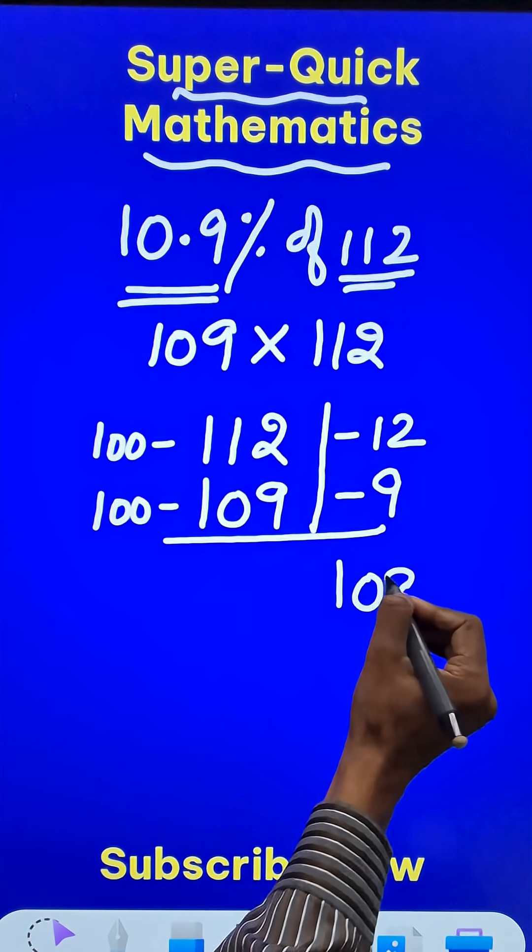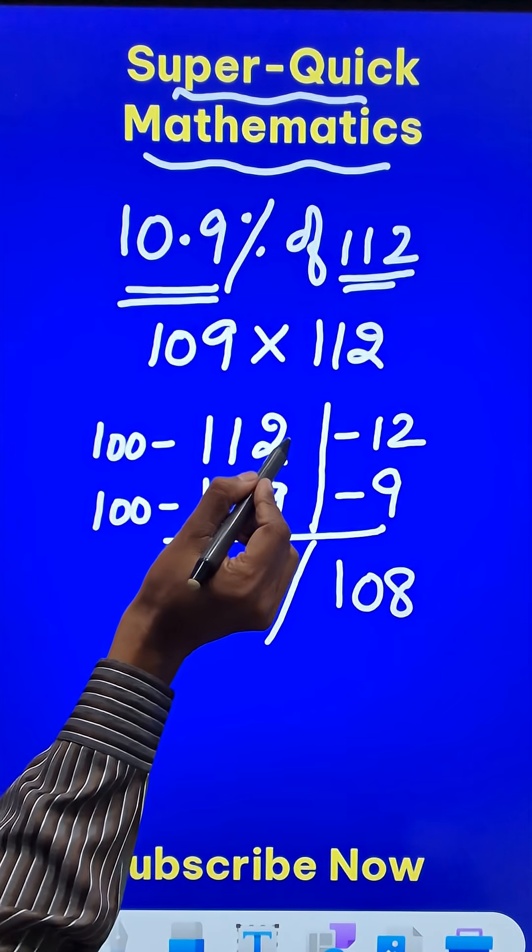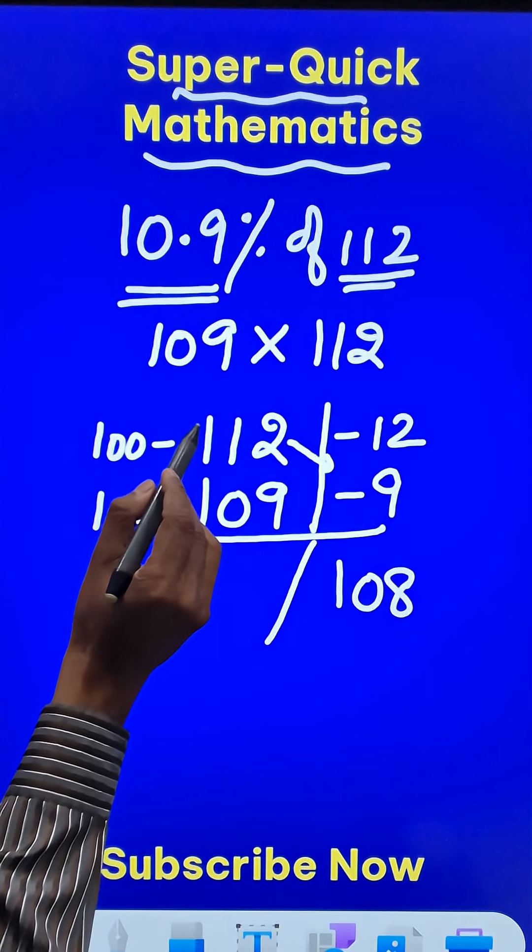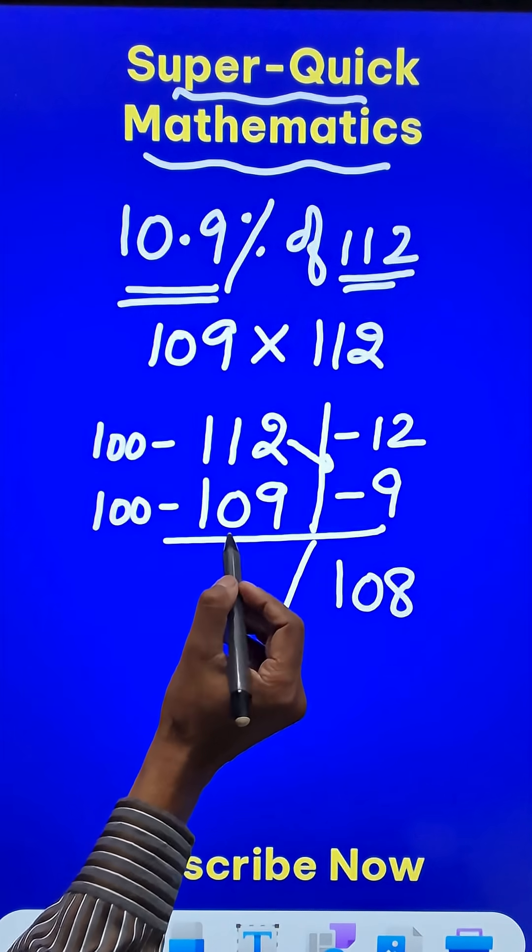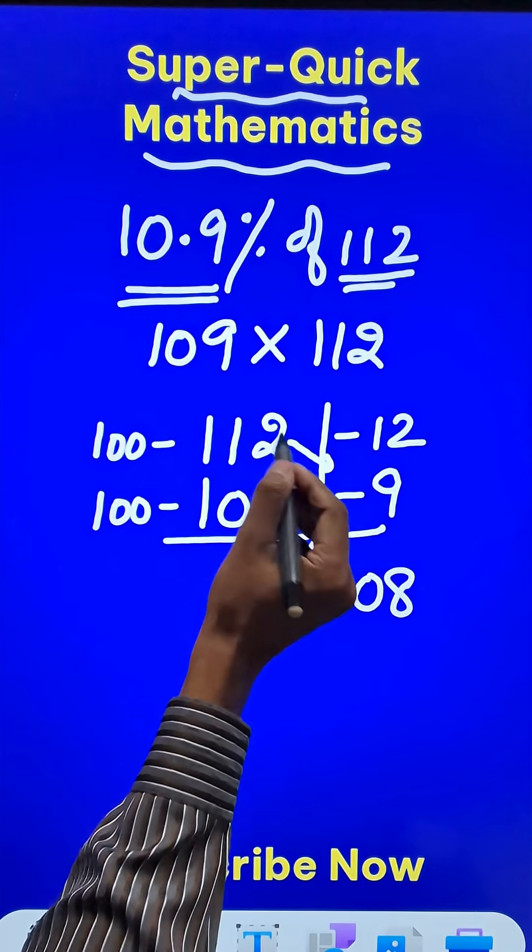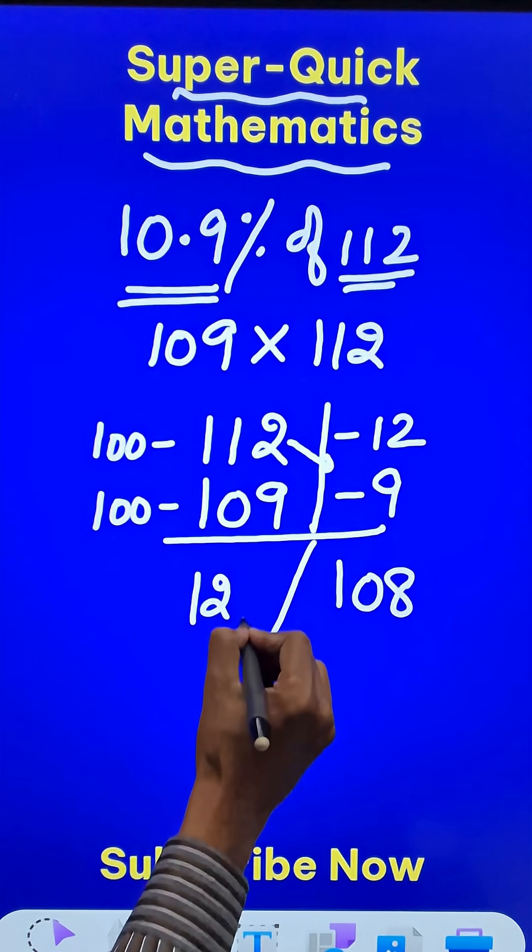So, I will write 108 here and then 112 minus negative 9 or you can say 112 plus 9 or 109 plus 12. Both of them will give you 121.